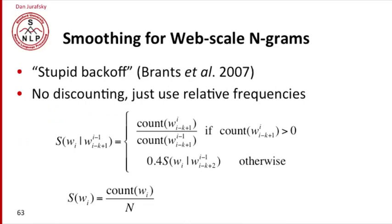What about smoothing for web scale n-grams? The most popular smoothing method for these very large n-grams is an algorithm called Stupid Backoff. Stupid Backoff is called stupid because it's very simple but it works well at the very large scale. And in fact, it's been shown to work as well as any more complicated algorithm when you have very large amounts of data.